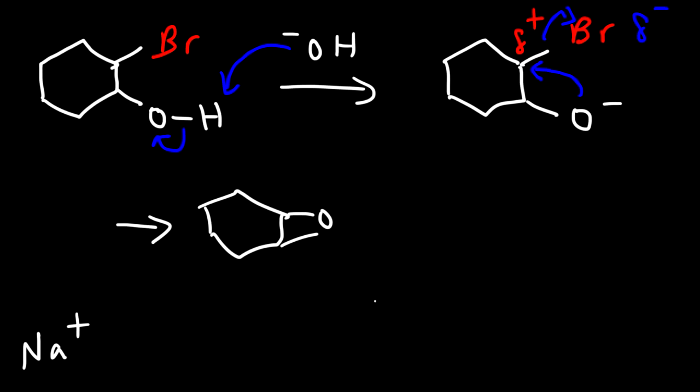So that's another way in which you can get an epoxide. You can react an alkene with a peroxy acid, or you can react it with Br2 in water, get the halohydrin, and then react the halohydrin with a strong base. That'll close the ring, turning it into an epoxide.